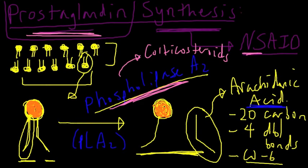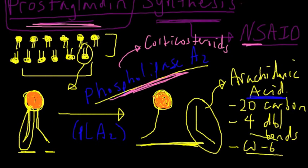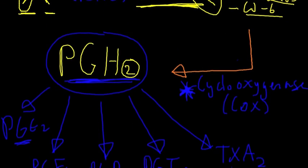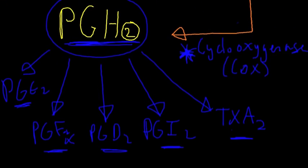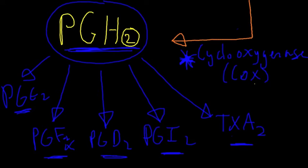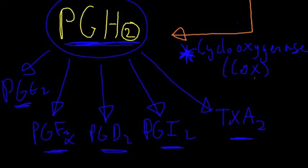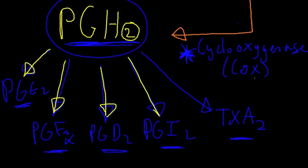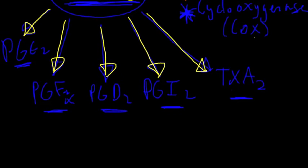So remember, we started with arachidonic acid, which had 4 double bonds. So through conversion by cyclooxygenase, we reduced that to 2 double bonds. And these individual arrows down here represent different synthase enzyme steps.